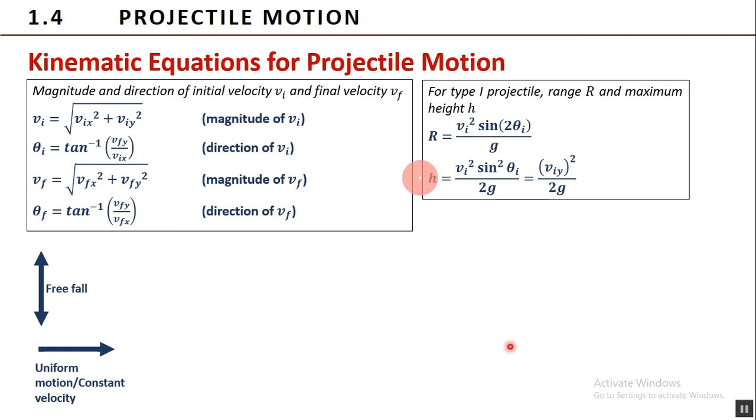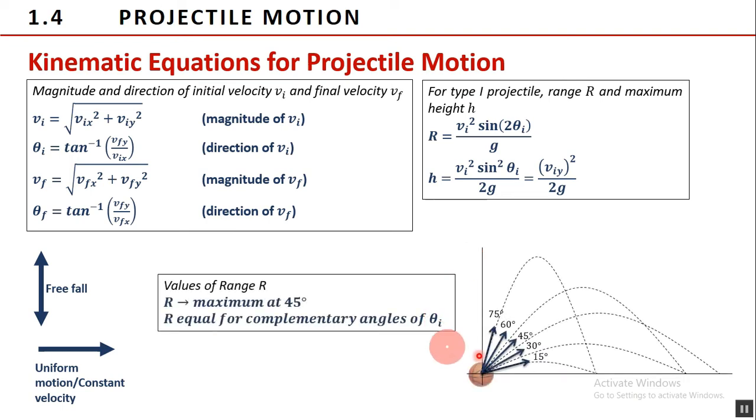Lastly, we investigate here the ranges of a projectile launched with the same speed but at different angles. As you can see, a projectile that was launched at 45 degrees has the maximum range. We also observed that ranges are equal for complementary angles. For instance, the range of 15 degrees is the same as its complementary angle 75 degrees. However, their heights are different.